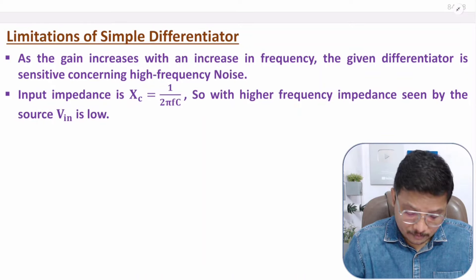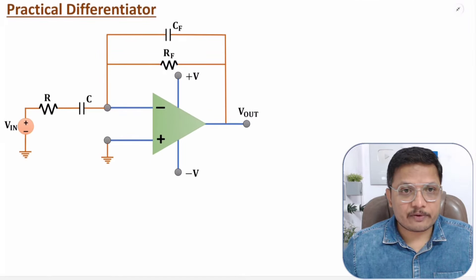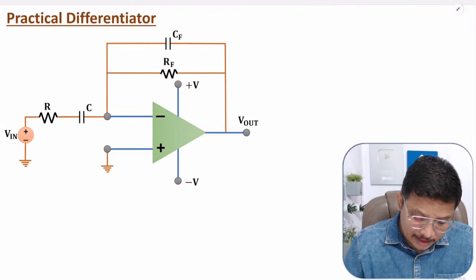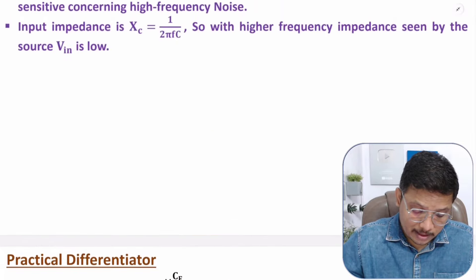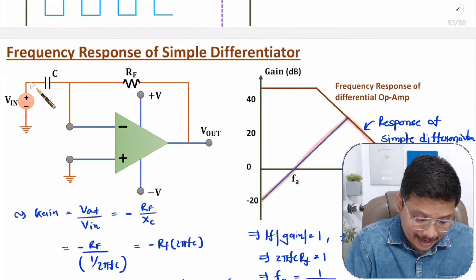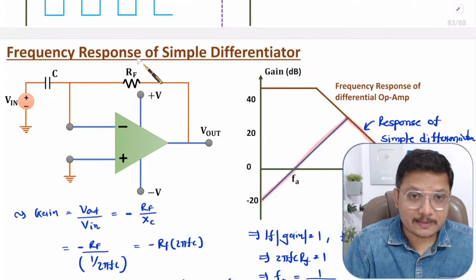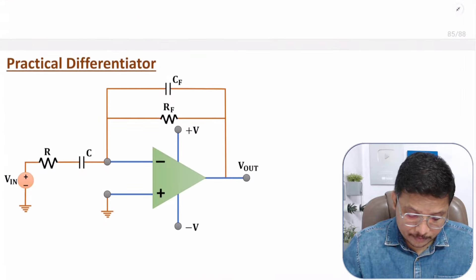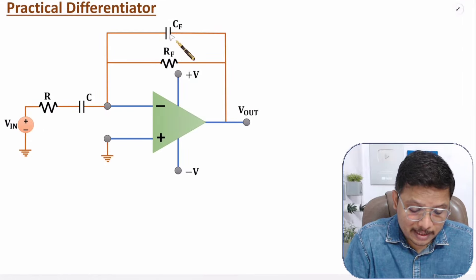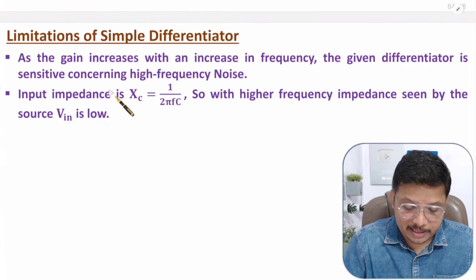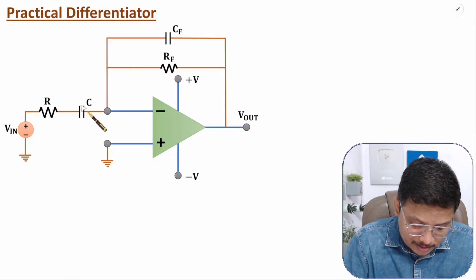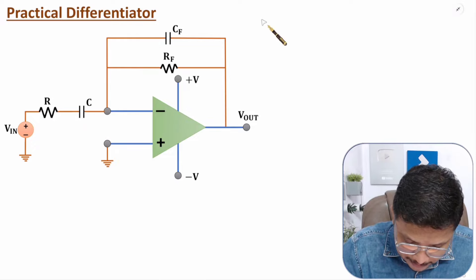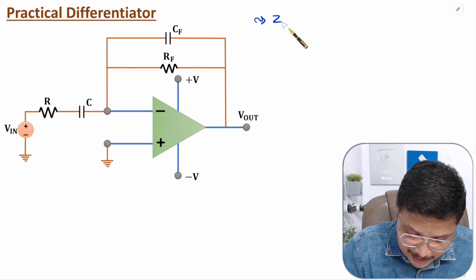Now how do we overcome those limitations? For that, let me show you the practical differentiator. In this practical differentiator, we additionally connect a resistance R in series with the input capacitor and a feedback capacitance Cf in parallel with RF. This is the basic circuit to which we additionally add resistance R and feedback capacitance Cf. Because of this, we overcome the limitations.